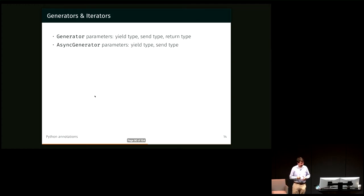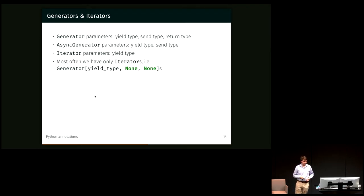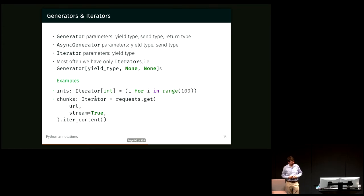So generators and iterators. These generators have three, yield type, send type, return type. Or in the case of an iterator, which is a more specialized generator, we have only the yield type, just the thing that we're yielding, which is quite often only what we're using if we have something like this where we're saying i for i in range 100, or only just range 100 actually. Then that's an iterator of int. Or if we're doing some sort of request and getting a stream response from that, then each of our chunks, our chunks come back in an iterator.